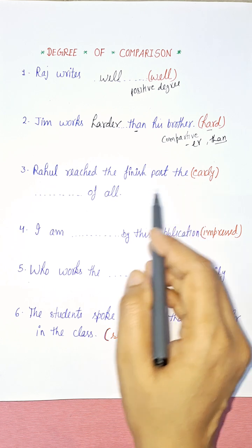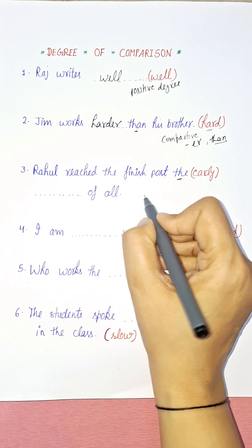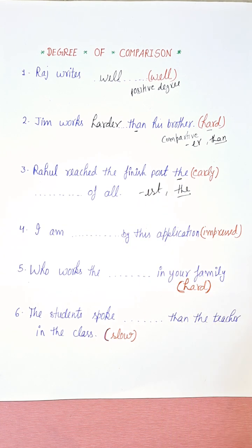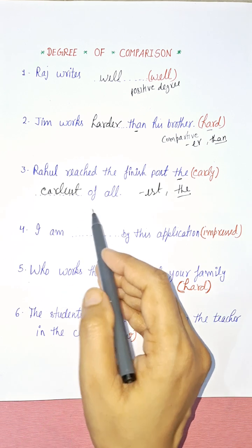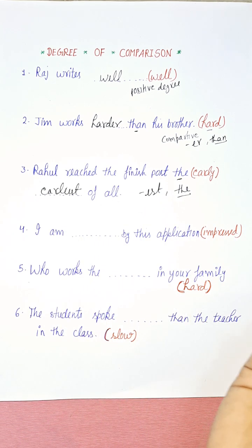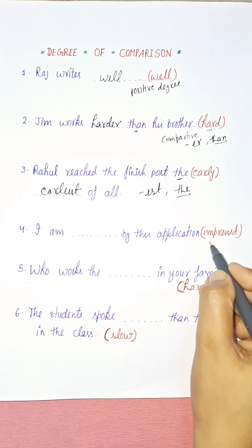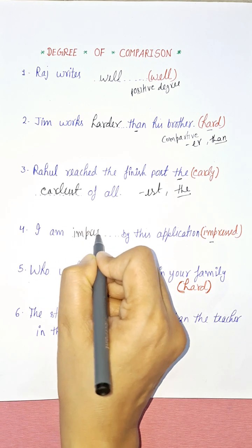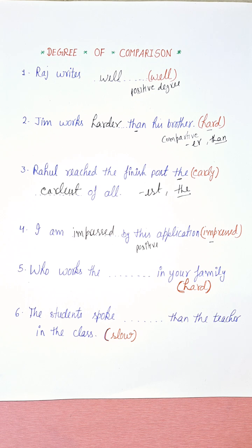Third sentence: 'Rahul reached the finish post the ___ of all.' The keyword 'the' tells you this is superlative degree, and you need the EST form. So the answer is 'the earliest of all.' Fourth sentence: 'I am impressed by the application.' No comparison is being made, so it is positive degree — the word stays the same.